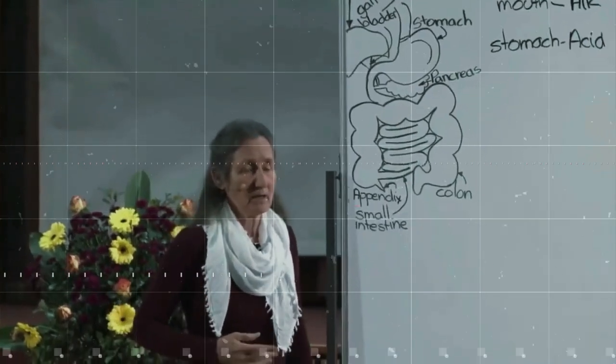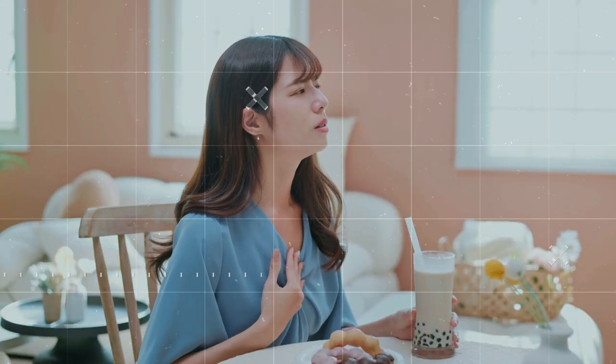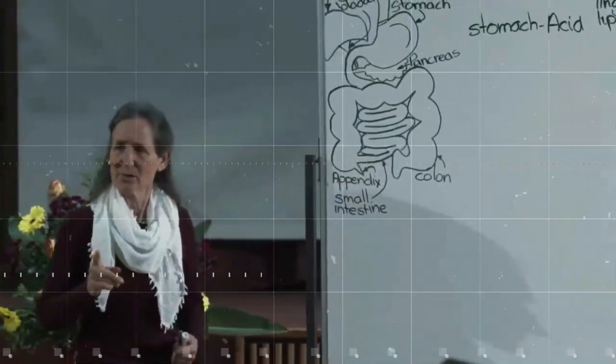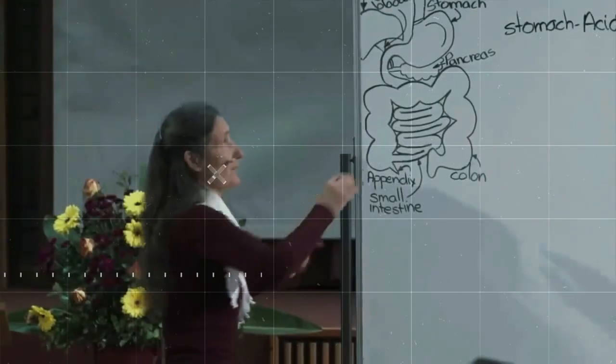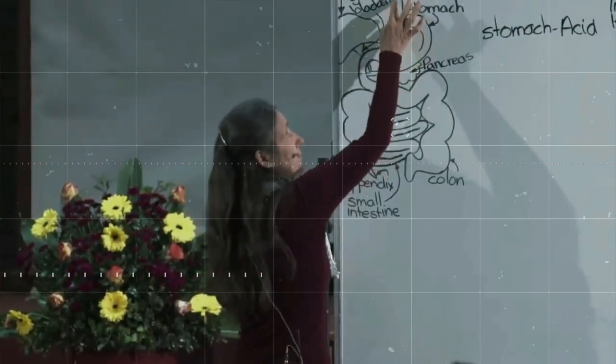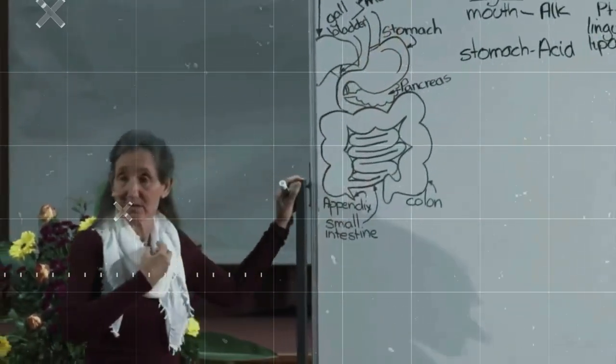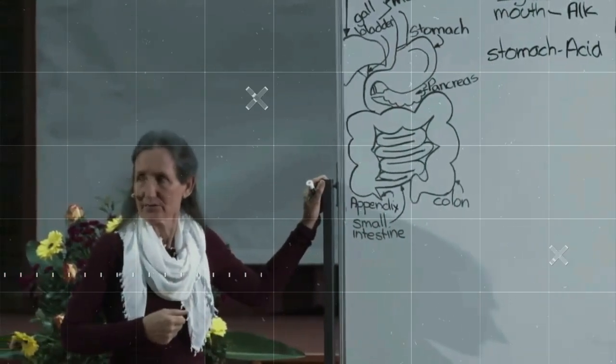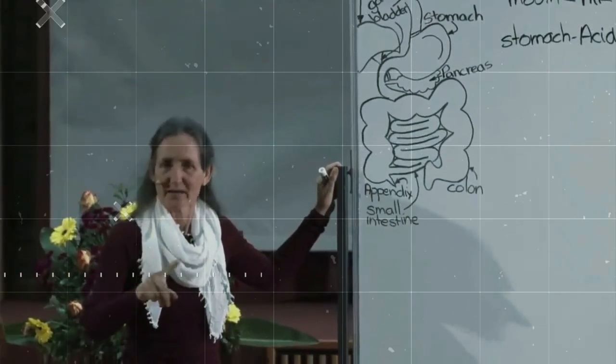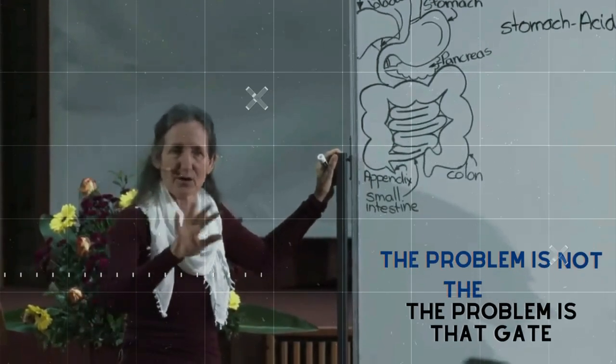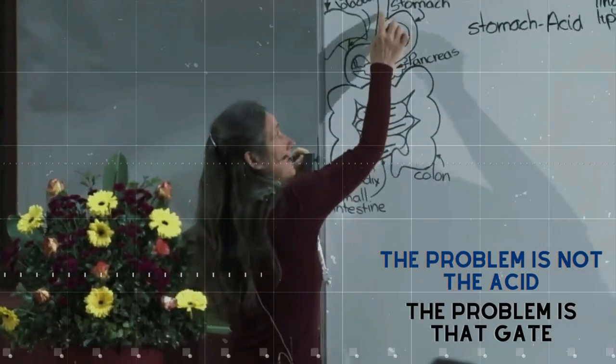Someone else said, well, it keeps coming up. Well, that's not the acid. The acid's not the problem. And by the way, if it keeps coming up, it can burn holes in the esophagus and the person can get an ulcerated esophagus. Can you see now it's not the acid? The problem's not the acid. The problem is that gate.